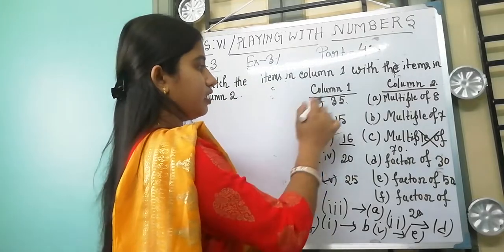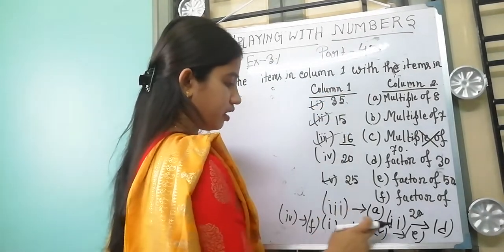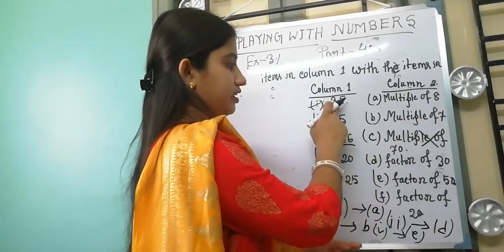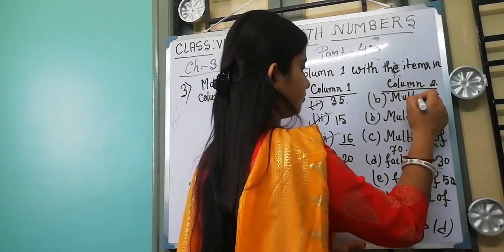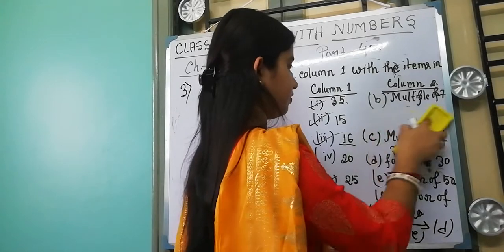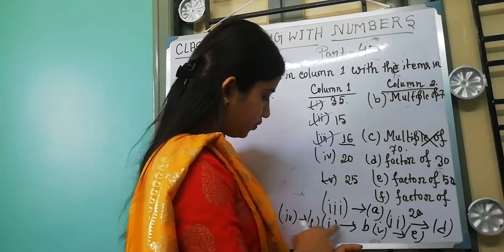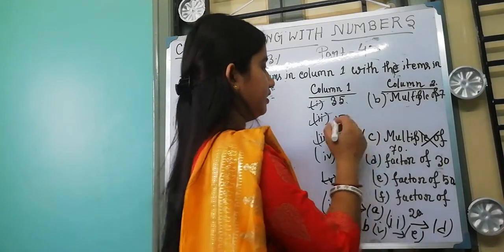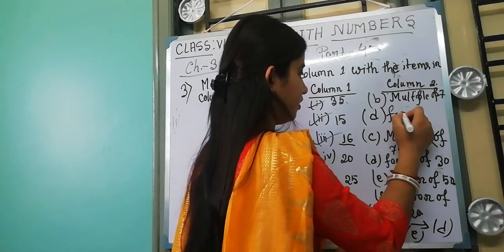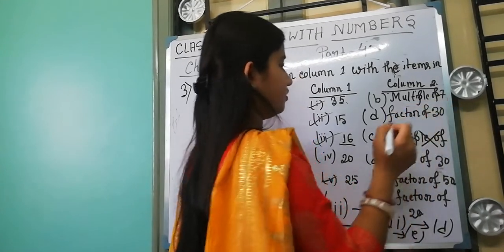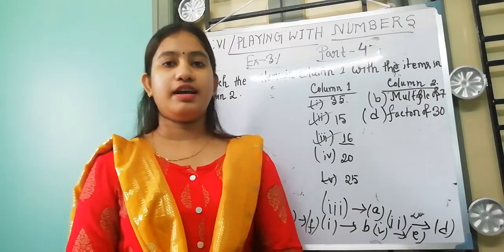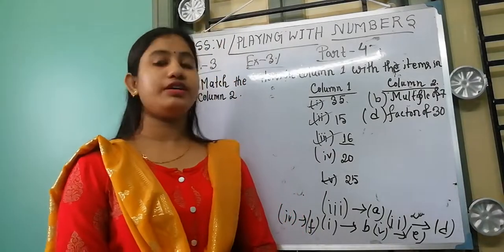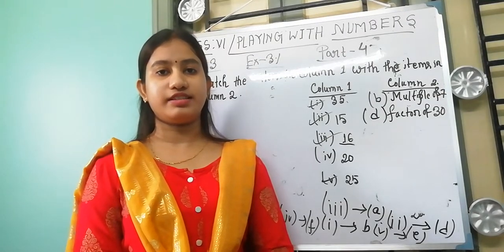Now these are the answers. You should write: column 1 number 1 is 35 → B (multiple of 7); number 2 is 15 → D (factor of 30); number 3 is 16 → A (multiple of 8); number 4 is 20 → F (factor of 20); number 5 is 25 → E (factor of 50). Please complete and write the remaining answers at home. This was exercise 3.1. Next day we will try exercise 3.2.